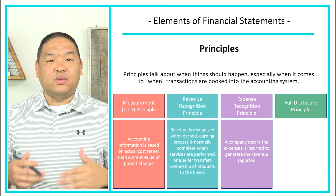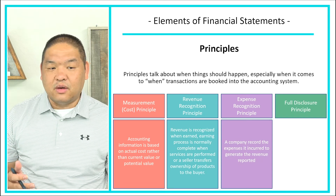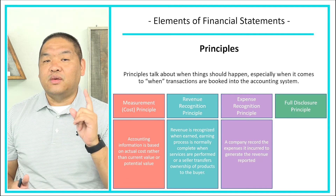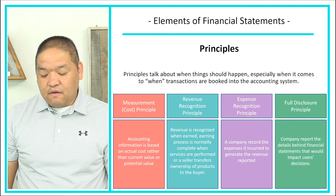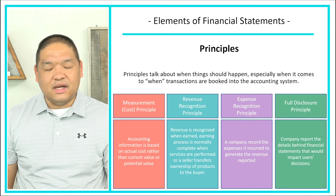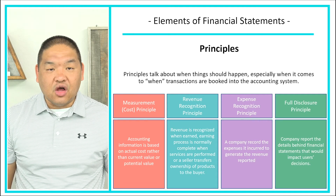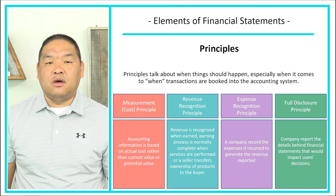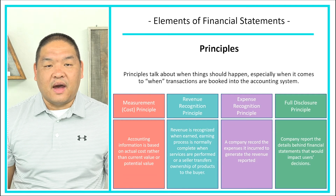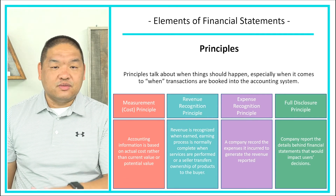The expense recognition principle says a company records expenses incurred to generate the revenue being reported. We book expenses when we've incurred them — not necessarily when we've paid them. We might have incurred an expense but not yet paid it, and we still book it when incurred. The full disclosure principle tells us that companies should report the details behind financial statements that would impact a user's decision — disclosing everything material to their shareholders.